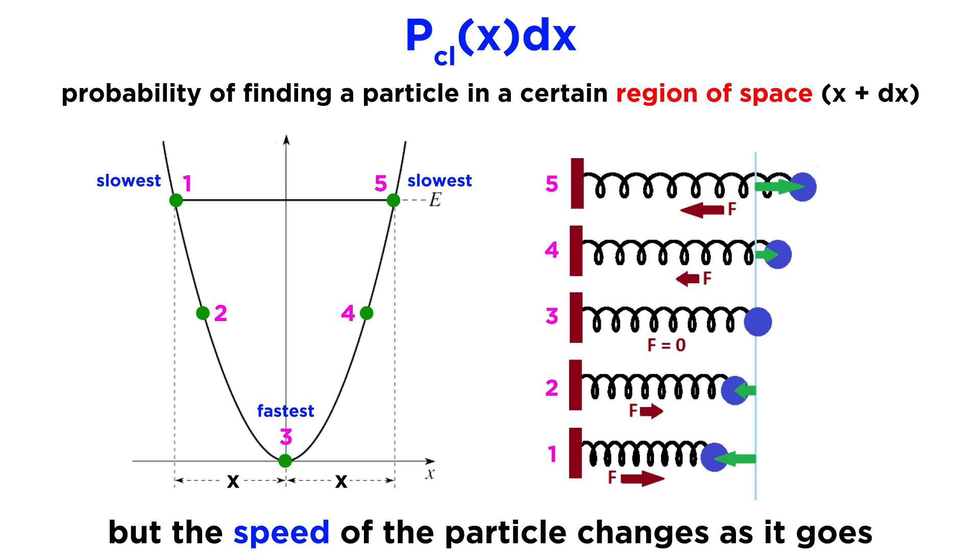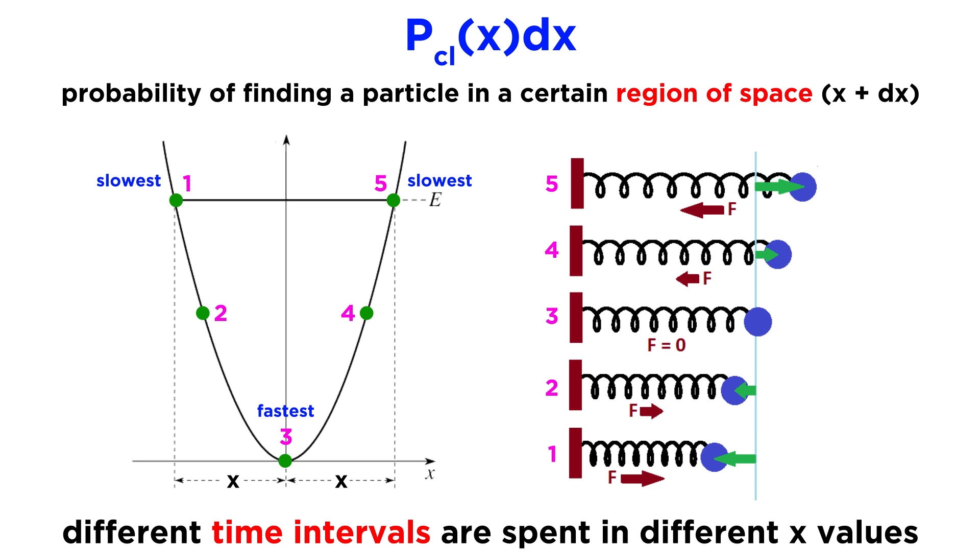But the particle is not always moving at the same speed. At the bottom of the parabola it moves much faster. So even though it always takes the same amount of time to traverse a full period, it doesn't spend the same amount of time in all the x values it travels through. PCl deals with precisely this. How long did the particle spend in a specific infinitesimal amount of space, x plus dx, compared with the full period?